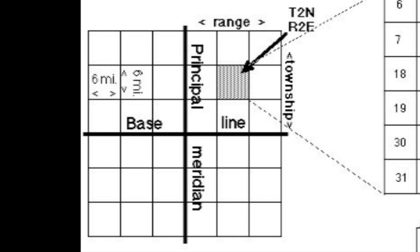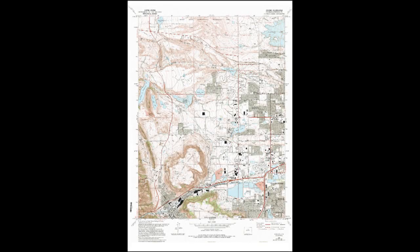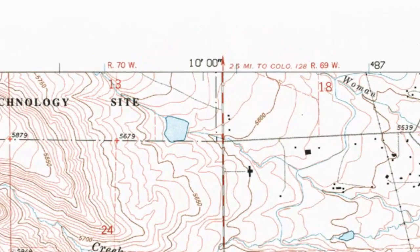Now we see how many of these township squares we range to the east or west of the nearest principal meridian. Instead of talking townships north or south, we talk of ranges to the east or west. The township offset was given on the left and right sides of the map, and logically the ranges are noted on the top and bottom of the map.